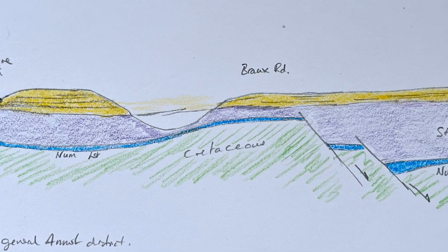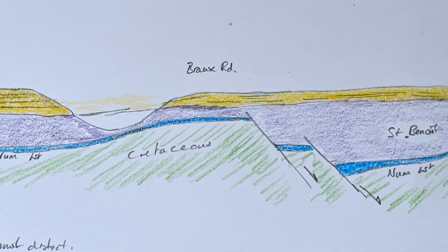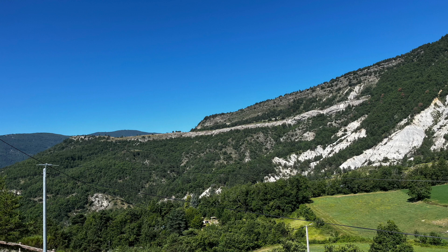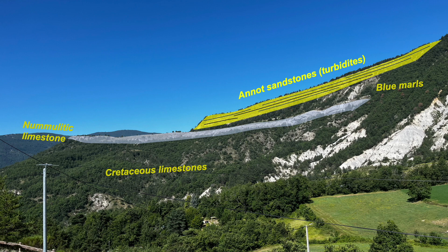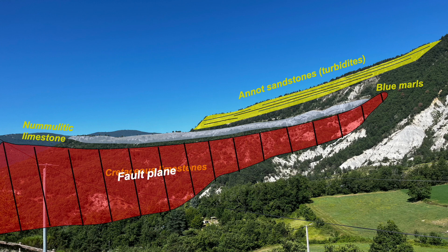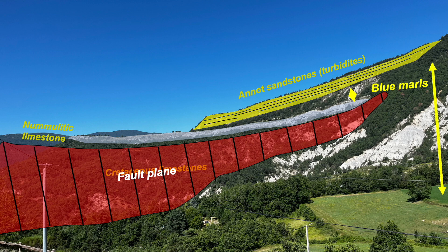Let's start by looking below the sandstones, and we can build up the succession. Cretaceous limestones, unconformably overlaid by the Eocene Nummulitic limestones, overlaid in turn, largely hidden by the ridge, by the blue marls, and then the turbidites. But there's a fault across this view, across which the blue marls thicken dramatically.